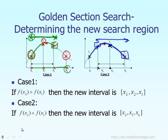Once you reduce the interval, you insert two new points x1 and x2, but luckily one of them you already have from the previous iteration. So depending on the function values: if f(x2) is greater than f(x1), the new lower bound stays the same but the new upper bound becomes x1. On the other hand, if f(x2) is less than f(x1), the new upper bound stays the same but the new lower bound changes.